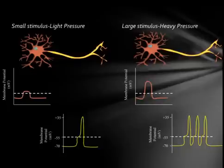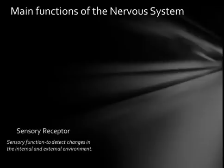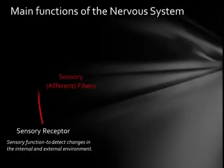Thus, the nervous system has three main functions. A sensory function that detects the changes that are happening both inside and outside the body — this function is largely carried out by the receptors of the body. The sensory receptors convey messages to the system via sensory or afferent nerve fibers. The messages are transmitted by the use of action potentials through the neurons.